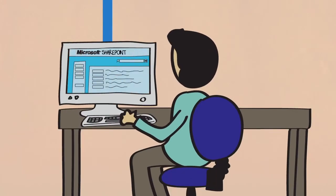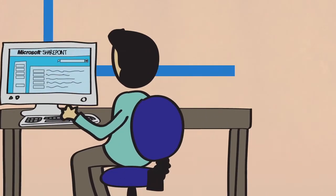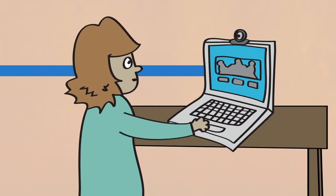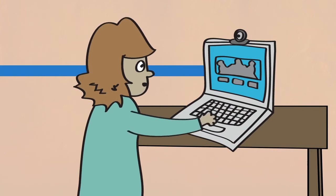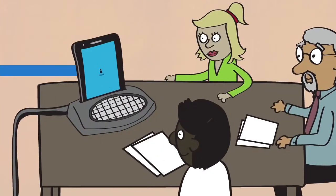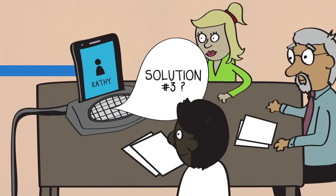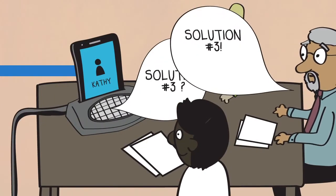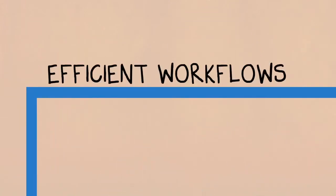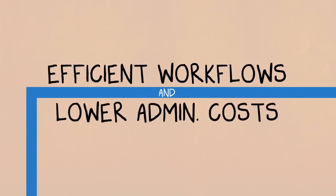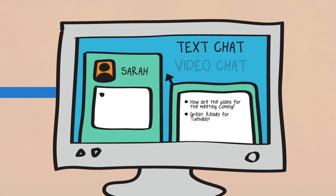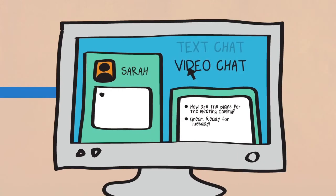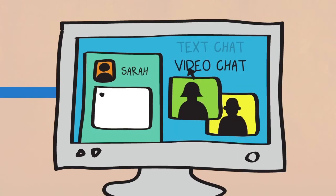It has built-in security features and encryption that helps you meet regulatory requirements, so there's practically nothing new to learn. Link makes voice and video calls easy and simple, sharing and collaborating on stuff in real-time, as well as with your existing room-based conferencing systems, which can result in more efficient workflows and lower administrative costs.